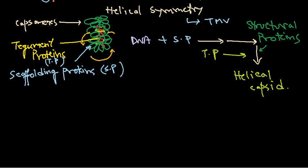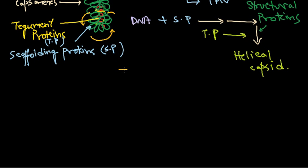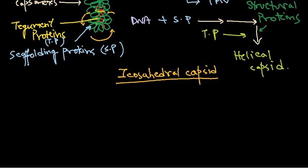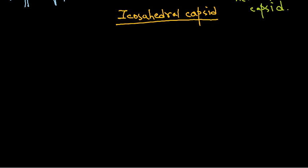Inside the helical virus capsid, we have our gene of interest. Now let us talk about the symmetry for the icosahedral virus — we will be looking at the icosahedral capsid and the symmetry behind it. Before going into detail, you should know how it looks. Let me draw the icosahedral symmetry here, larger so that you can see the whole point.